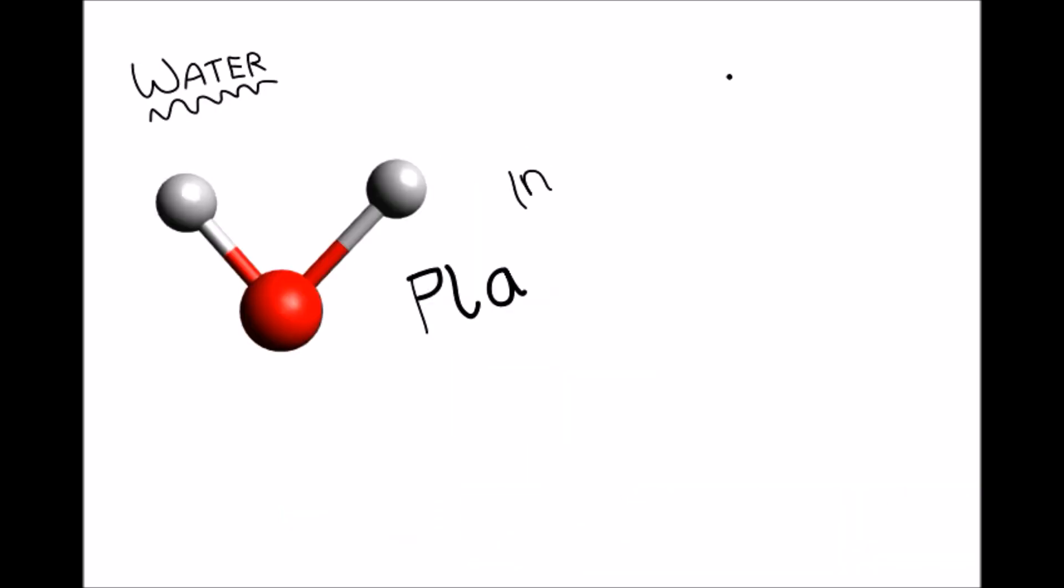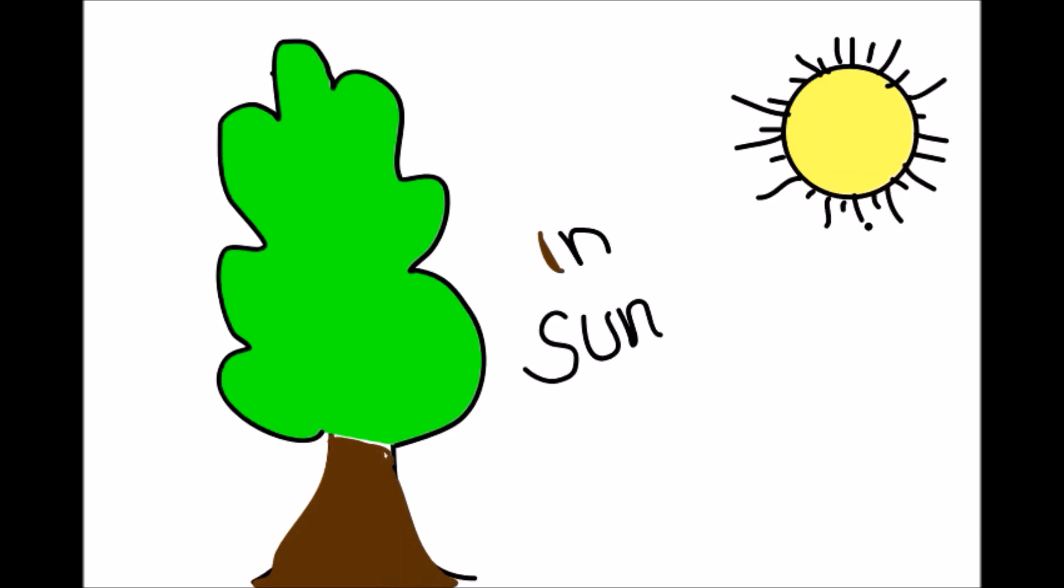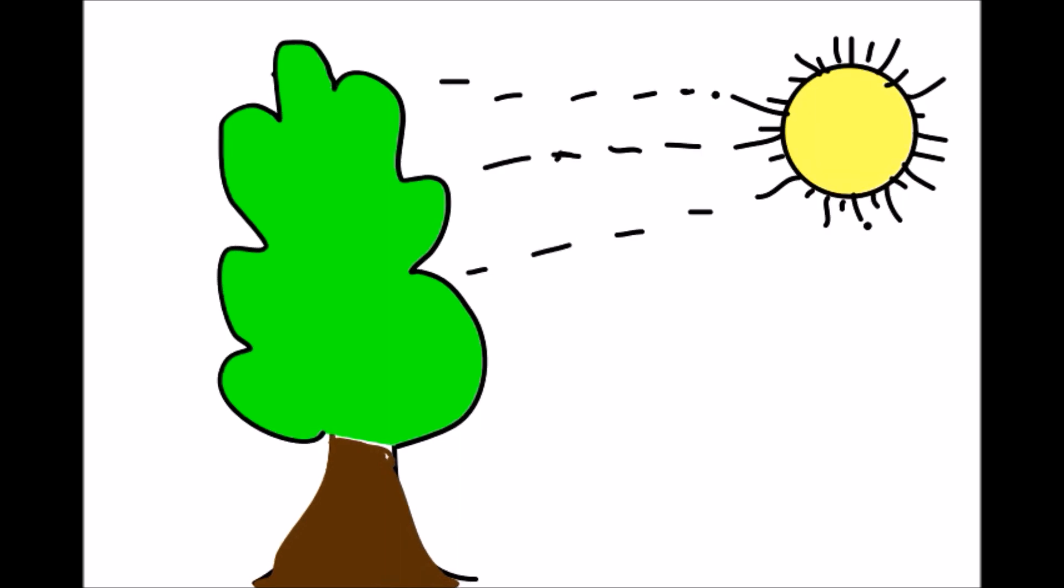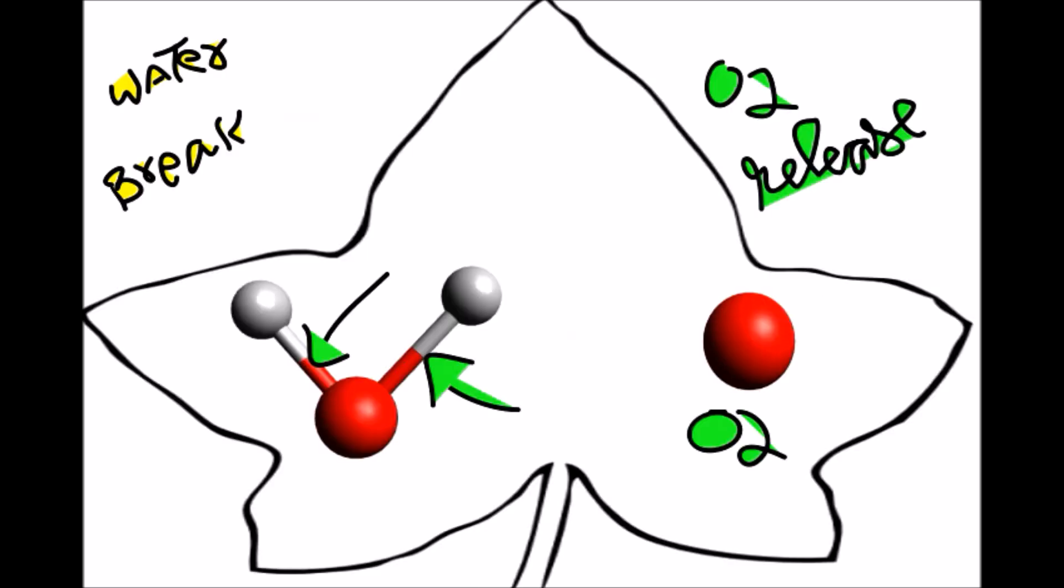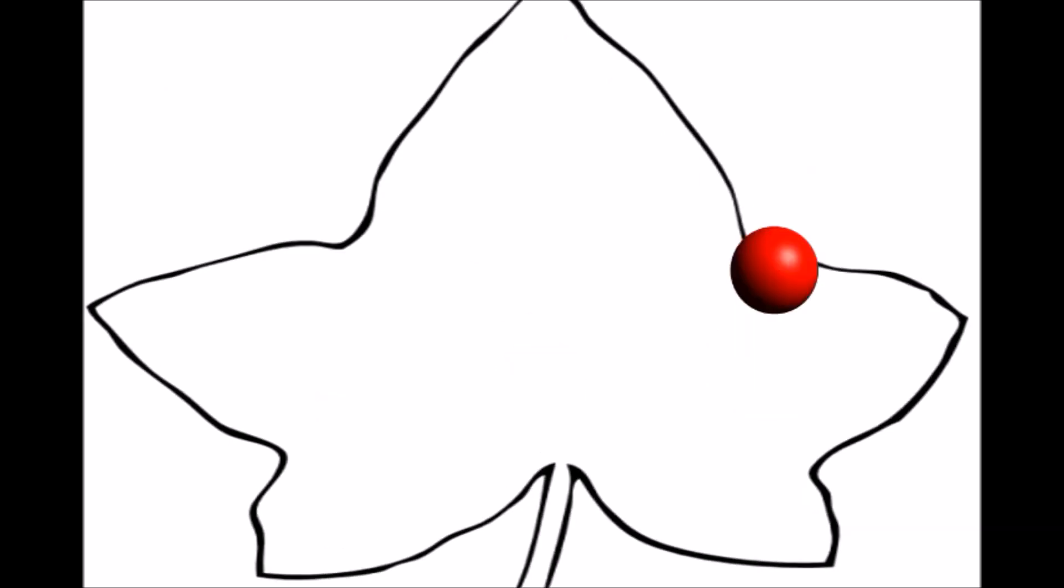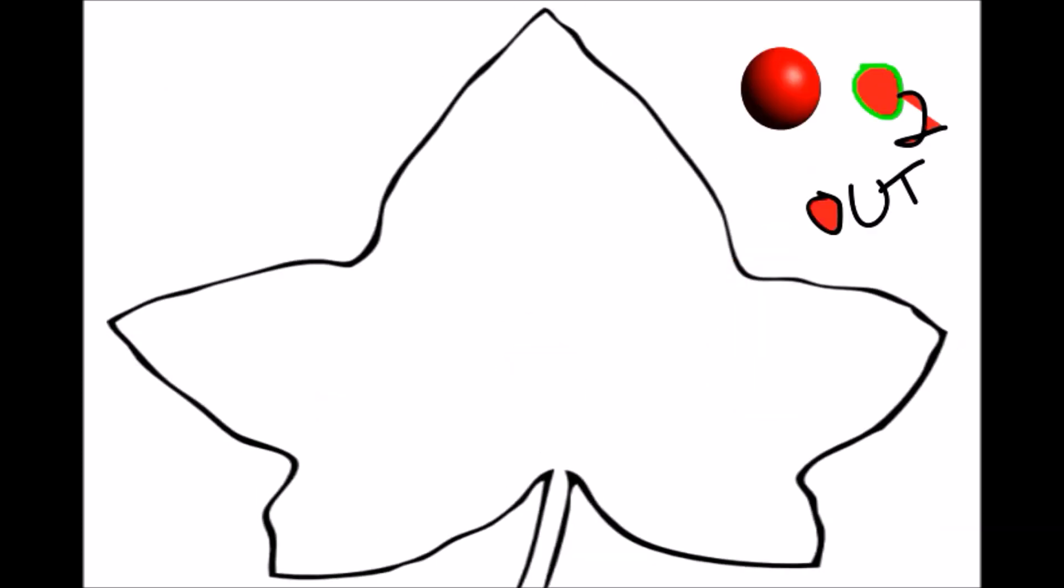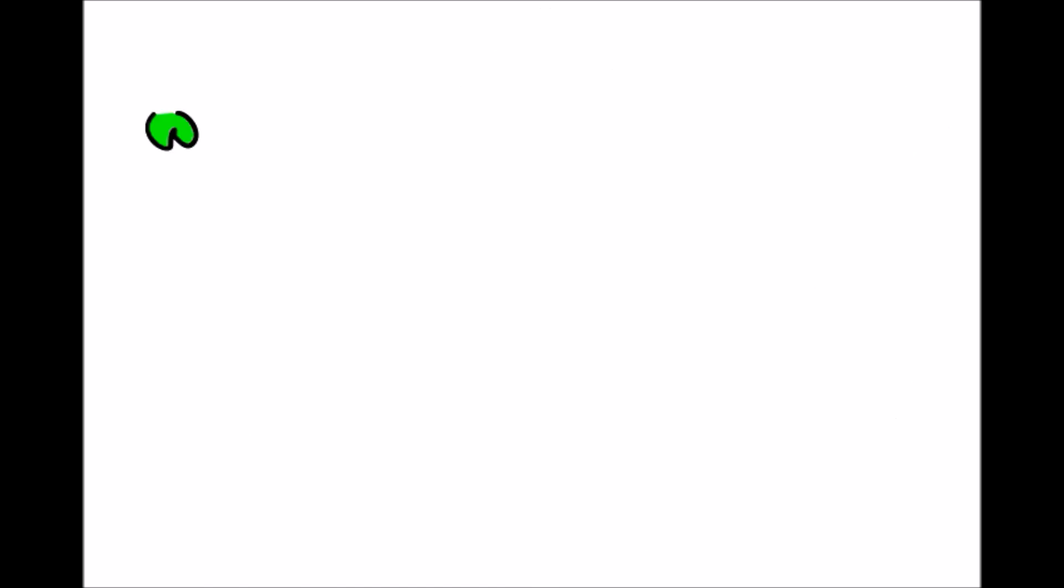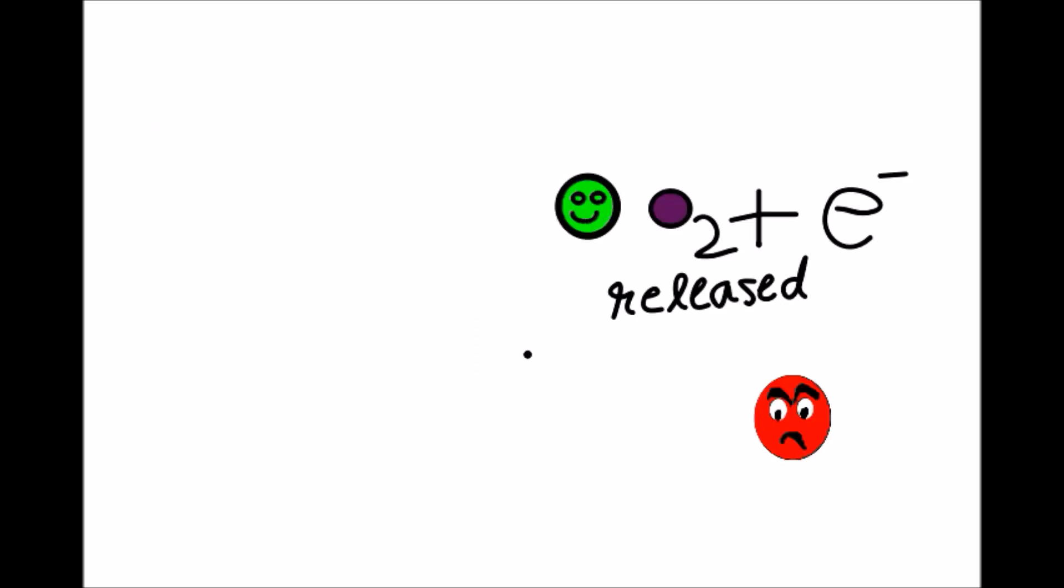Water in plants in presence of sunlight. Here is a typical leaf where water breaks and oxygen slowly releases out into the atmosphere. When water cleaves, oxygen is released along with an electron.